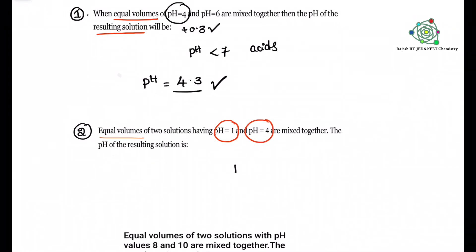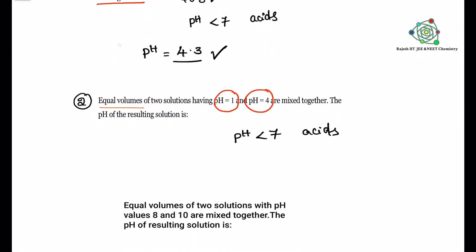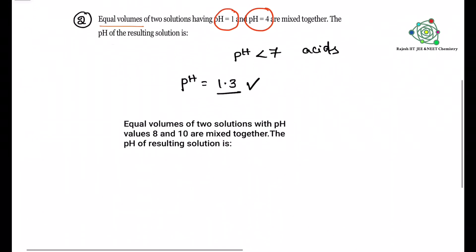You see that two solutions pH is less than 7. That means resultant solution is also acid. So what is the resultant solution pH? Very simple. That is 1.3, because we need to add 0.3 for the lower number.